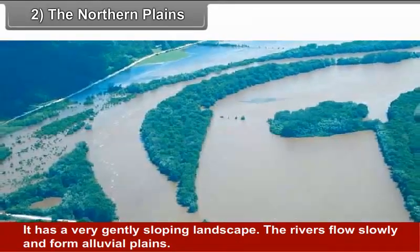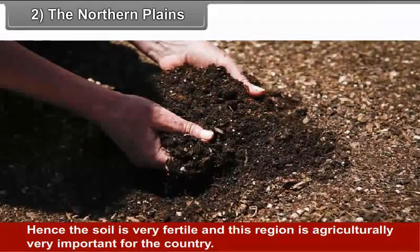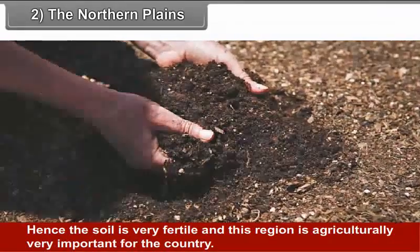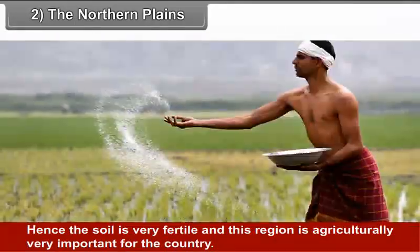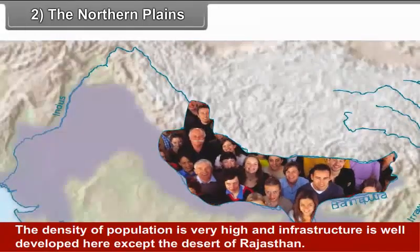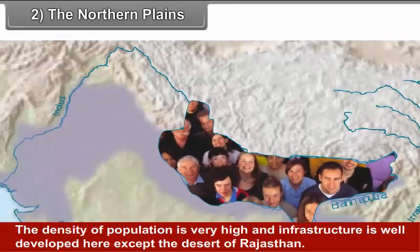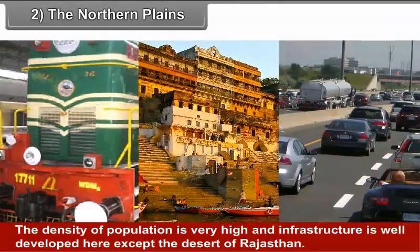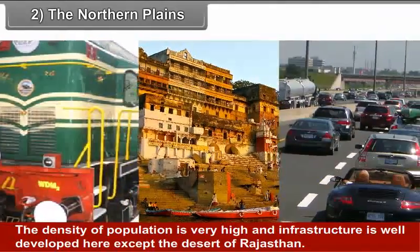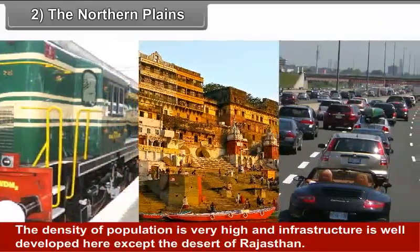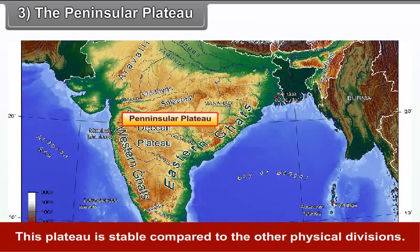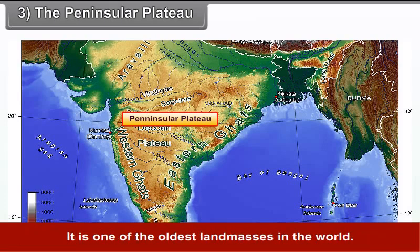The Northern Plains: These plains form an unbroken belt of alluvial soil which increases in thickness from west to east. The landscape slopes very gently and rivers flow slowly, forming alluvial plains. Hence, the soil is very fertile and this region is agriculturally very important. The density of population is very high and infrastructure is well developed here, except in the desert of Rajasthan.